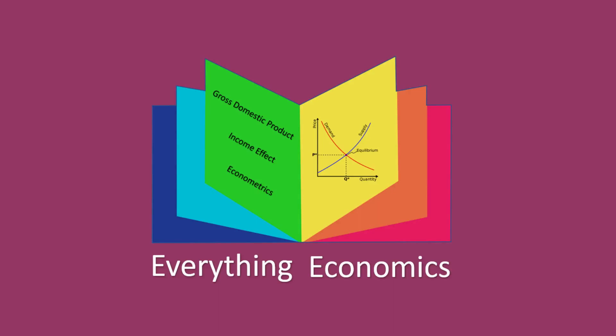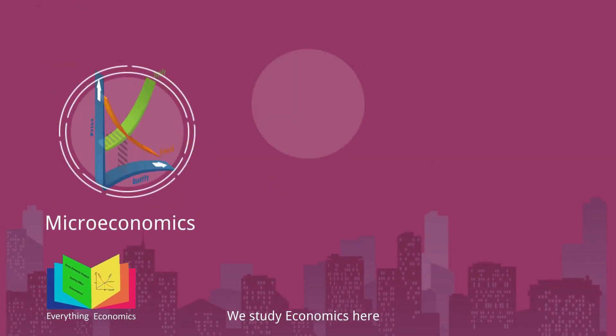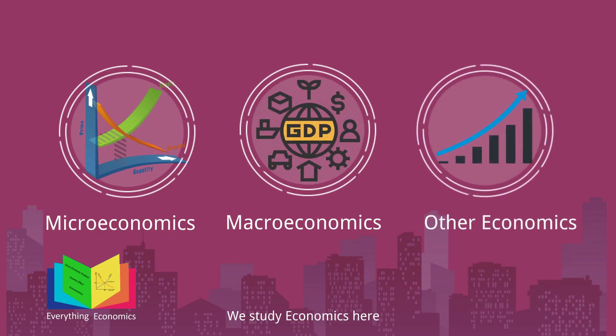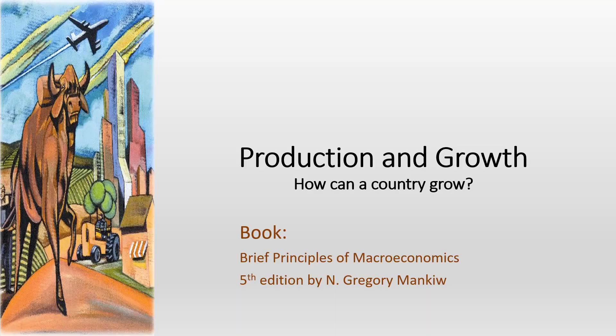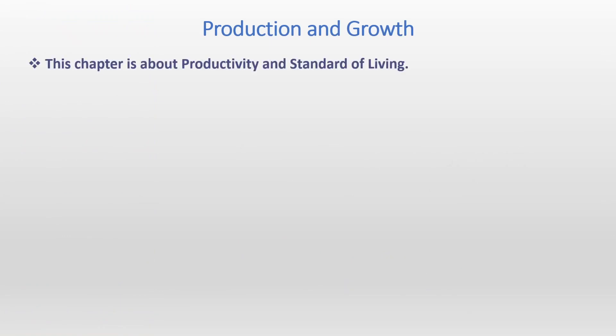Welcome to Everything Economics, where we study microeconomics, macroeconomics, and every other type of economics. Today the chapter we are going to study is Production and Growth — how can a country grow. The book we are following is Brief Principles of Macroeconomics, Fifth Edition, by N. Gregory Mankiw.